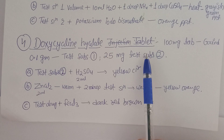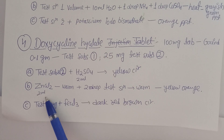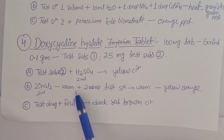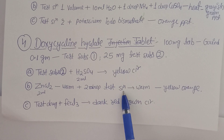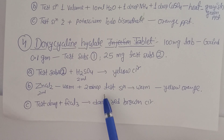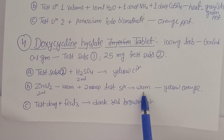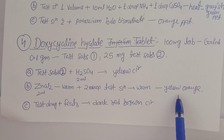Second test for doxycycline: add 2 drops of test solution to 2 ml of zinc chloride and warm. A yellow-orange color confirms the presence of doxycycline.